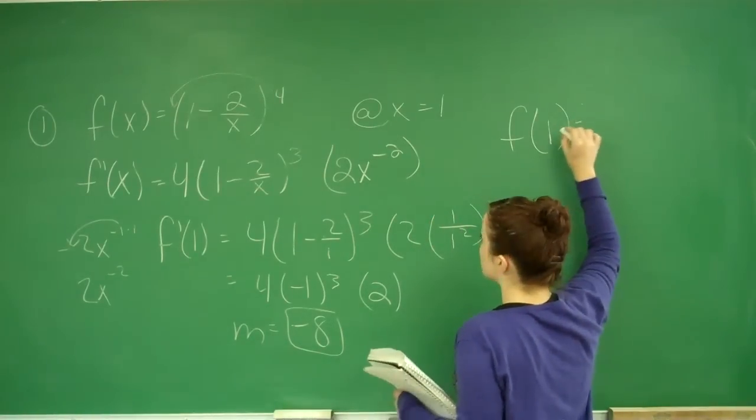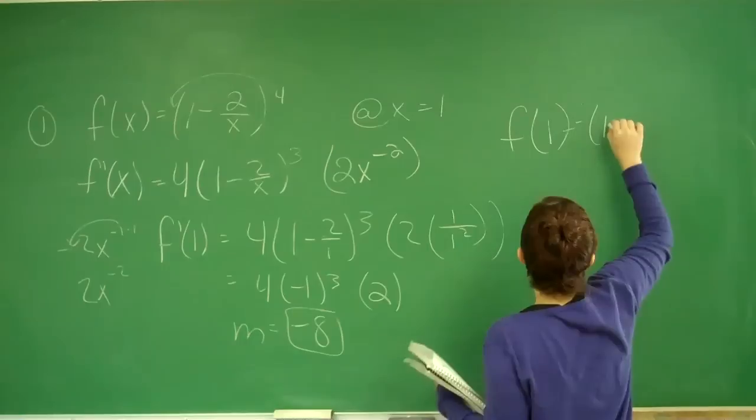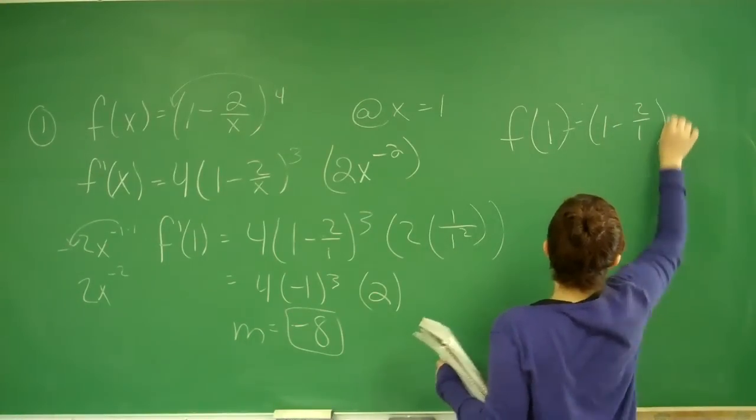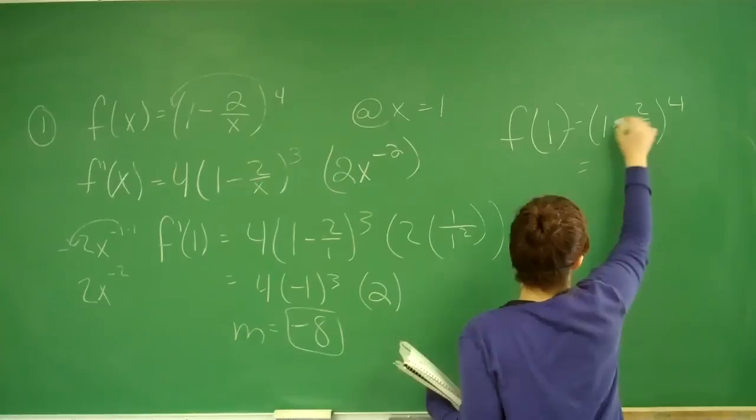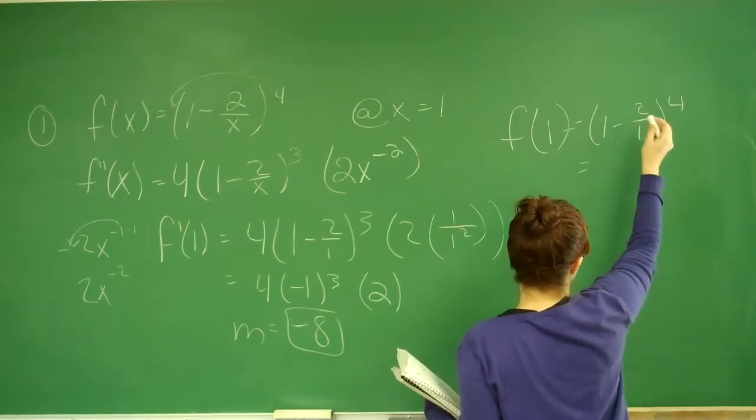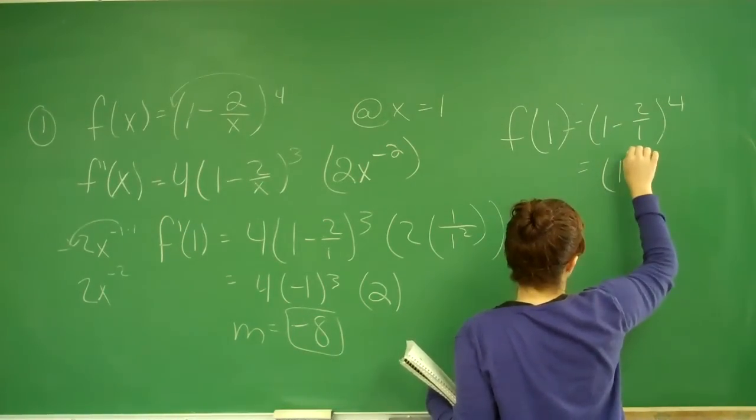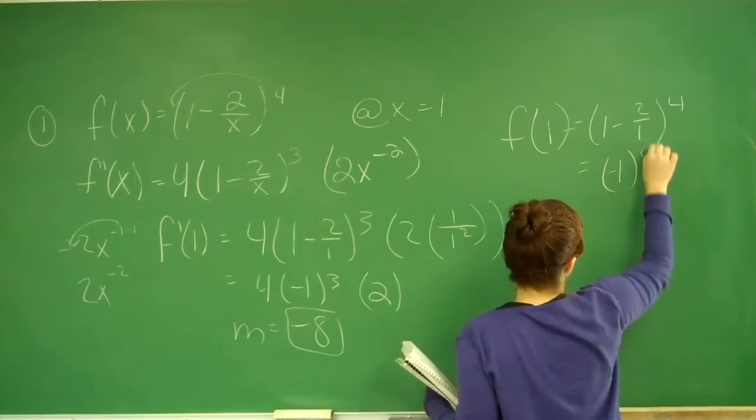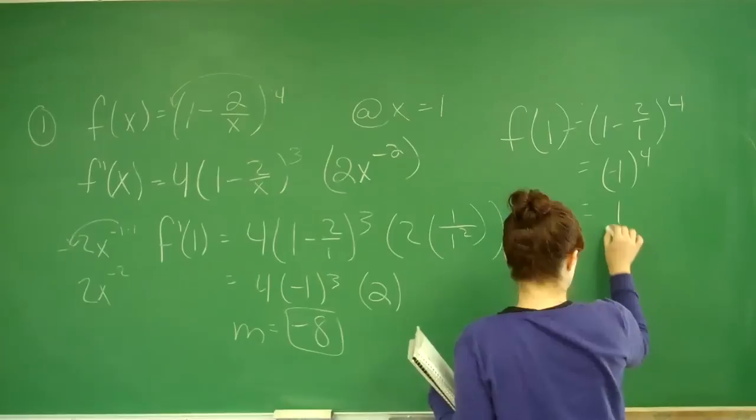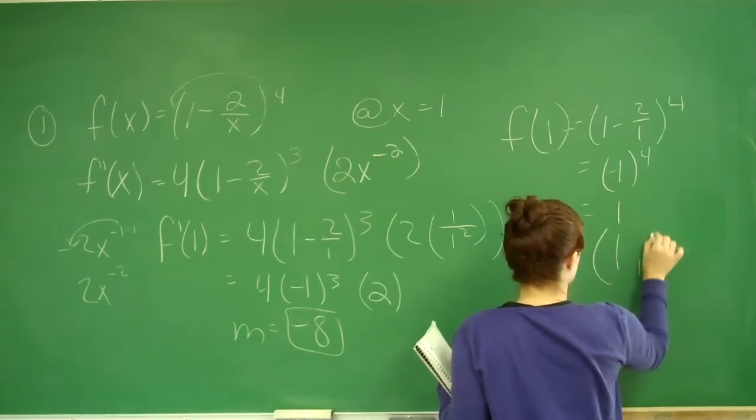We're going to find f(1). f(1) = (1 - 2/1)^4, which is (1 - 2)^4 = (-1)^4 = 1. So our point is (1, 1).